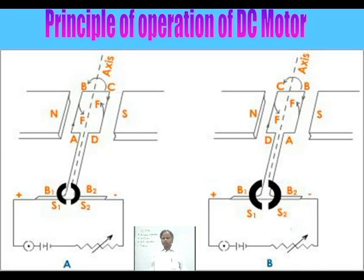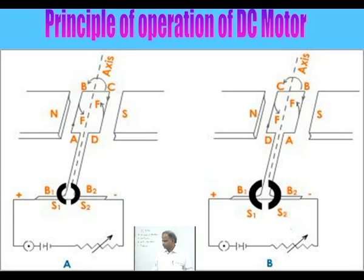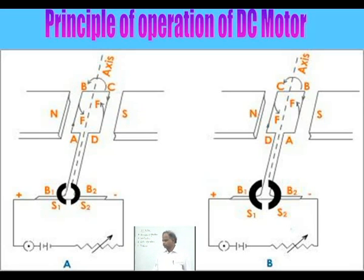Due to this force, side AB will be lifted up and side CD will be pushed down. This occurs because the coil from A to B carries current in a direction such that, combined with the magnetic field from north to south, the force is in the upward direction for AB. For CD, the current flows in the reverse direction, so the force experienced is in the downward direction. As a result, rotation of the coil occurs.